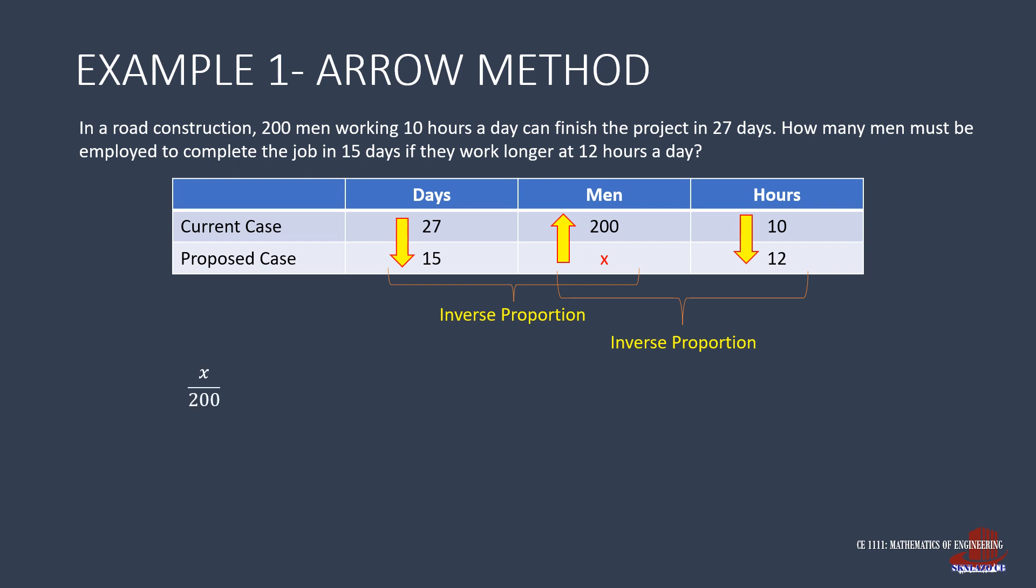So for the number of men, the ratio to be taken is x over 200. This is equated by the number of days from tail to head, 27 over 15, multiplied by the number of hours, 10 over 12. With the equation already completed, we get x as 27 times 10 by 200 over 15 times 12, simplified as 300 men.